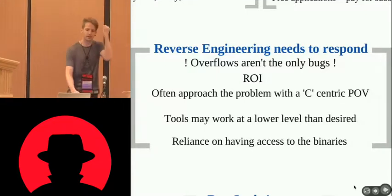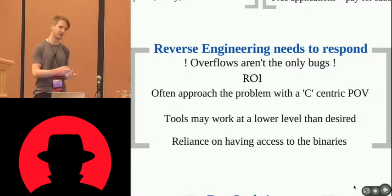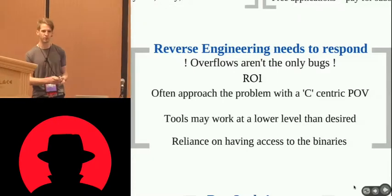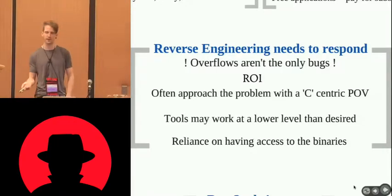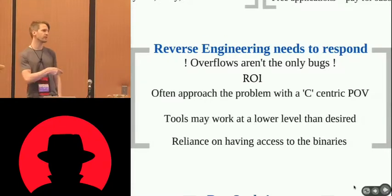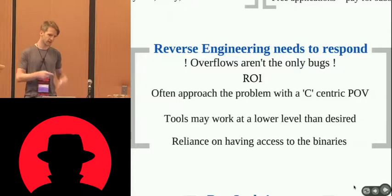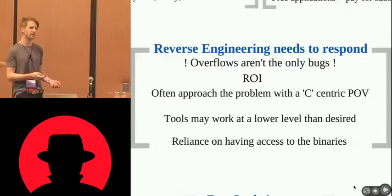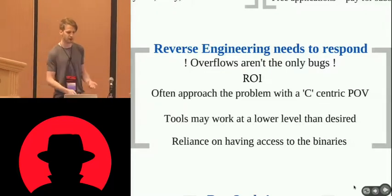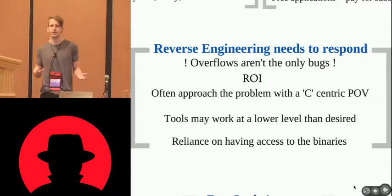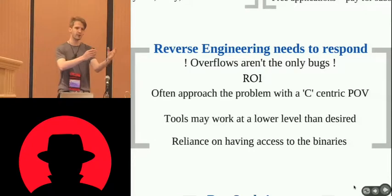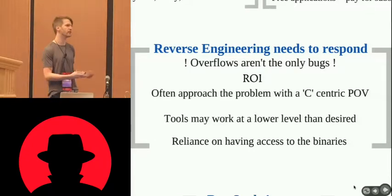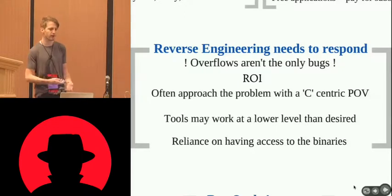Overflows aren't the only bugs. There's a huge amount of very useful bugs that aren't overflows or heap attacks — they are just plain logic flaws in Python or Ruby source code. The return on investment for reversing a modern memory corruption bug is huge: six to twelve months of dedicated research time. If you can do three weeks of research on a bug and get just as much leverage, you've got a much better ROI. A lot of tools and techniques are very C-centric, but modern languages are all reflective — when you distribute the binary, you're actually distributing the source code because you can reflect it all out.